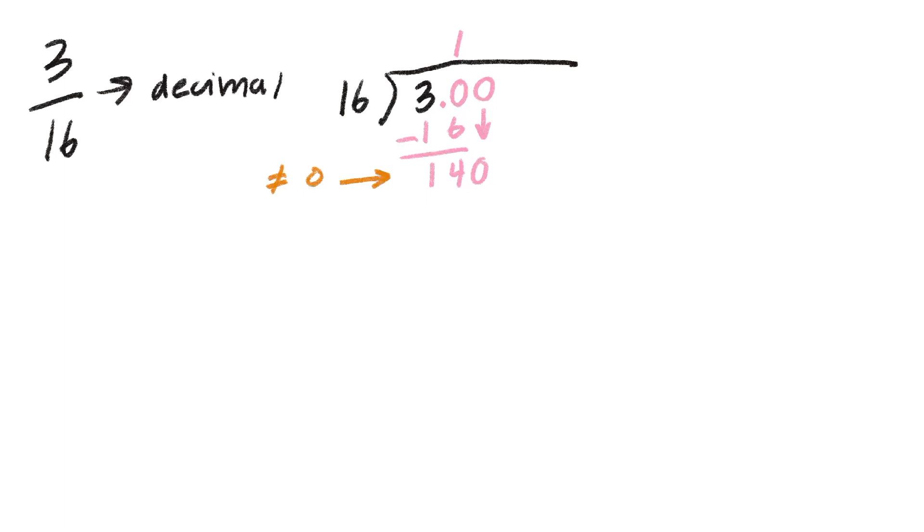Because the remainder isn't zero yet, we still have to keep going. So add another zero, bring it next to the 14, and see how many times 16 goes into 140, which is 8. Put an 8 here, and then 8 times 16 is 128. Subtract that from 140, we get 12. Let's get another zero, bring it down here, and 16 goes into 120 seven times. 7 times 16 is 112. Subtract from 120, get 8. Notice that so far there's no pattern to these remainders that we've gotten, so no digits are repeating.